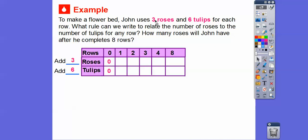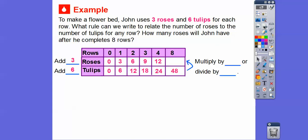Following the pattern — John uses three roses per row — we keep adding three for roses and adding six for tulips. So the roses sequence is 3, 6, 9, 12 and the tulips sequence is 6, 12, 18, 24. They've given us 48 tulips at row eight, and the question asks us to go all the way to row eight.